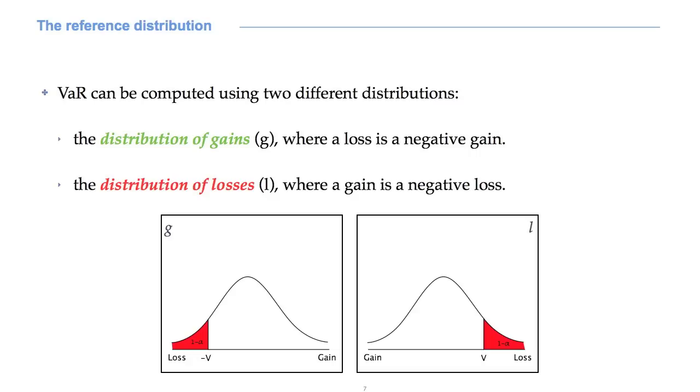The VAR can be computed using two different distributions. The distribution of gains, where a loss is a negative gain, or the distribution of losses, where a gain is a negative loss. We will prefer this second approach, but nothing really changes from a conceptual point of view.